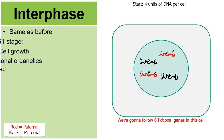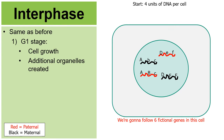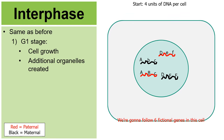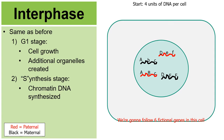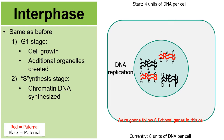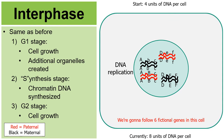Interphase is really the same as before. There's a G1 stage where the cell grows and creates additional organelles such as extra vacuoles and lysosomes. Then comes the S stage, or synthesis stage, where DNA replication occurs. A duplicate copy is made, so the cell goes from four units of DNA to eight. Then comes the G2 stage where the cell grows some more. Interphase prior to meiosis is very similar to interphase prior to mitosis.